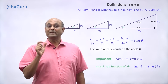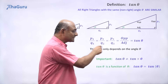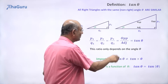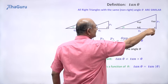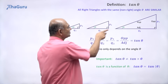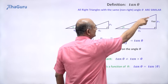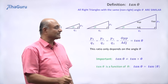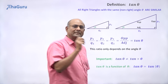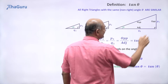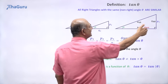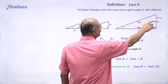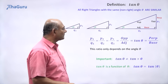Why the name tan? The name comes from tangent — we will later see why and what is the relationship between tangent and tan. So right now, just remember that tan theta is the opposite side divided by the adjacent side. The opposite means exactly opposite to angle theta. The adjacent is the one that is adjacent to angle theta but not the hypotenuse.